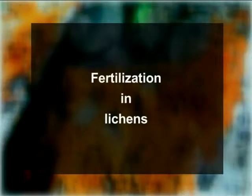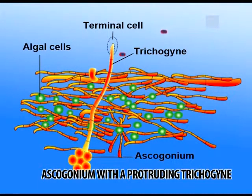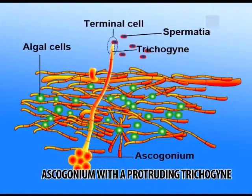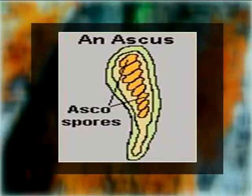Fertilization in lichens: spermatia adhere to the gelatinous wall of the projecting terminal cell of the trichogyne. At the point of contact, the intervening walls of the spermogonium and the trichogyne dissolve. The contents of the spermogonium migrate through the pore into the trichogyne. After fertilization, many ascogenous hyphae develop from the basal portion of the ascogonium. Asci develop on the ends of these freely branched ascogenous hyphae. Two nuclei of the ascus cell fuse to form a diploid nucleus, which later divides and re-divides to form eight haploid daughter nuclei. These ascus-bearing structures are called ascomata.